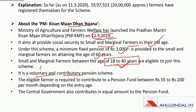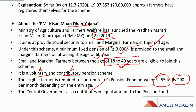PM Kisan Maandhan Yojana is a voluntary and contributory pension scheme. Farmers must contribute between rupees 55 to rupees 200 per month depending on their entry age. The central government also contributes an equal amount to the pension fund. The pension fund manager for this scheme is the Life Insurance Corporation of India. Farmers covered under NPS (National Pension Scheme), EPFO schemes, and ESIC schemes are not eligible for this scheme.